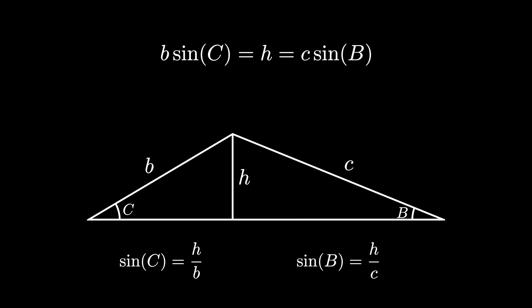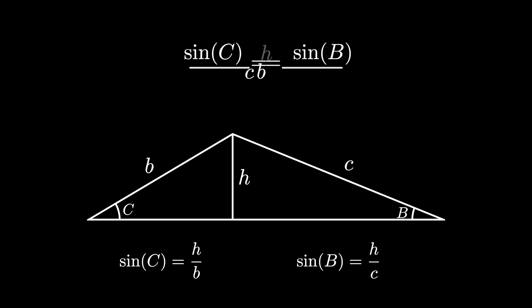From this we see that B times the sine of angle C equals C times the sine of angle B. Dividing both quantities by B times C, we see that sine of angle C divided by C is equal to the sine of angle B divided by B.